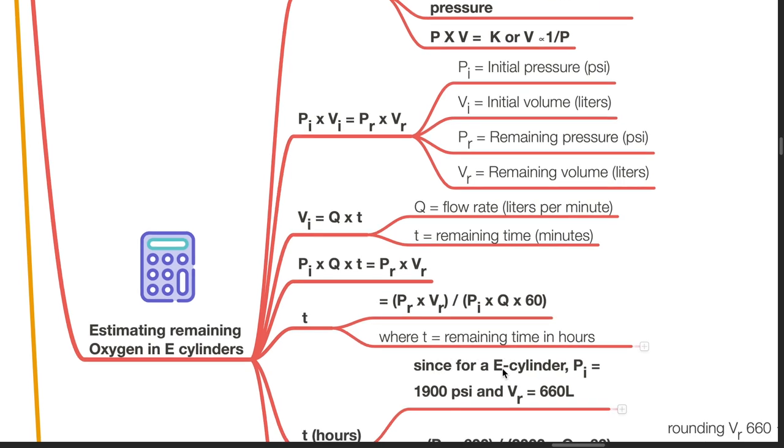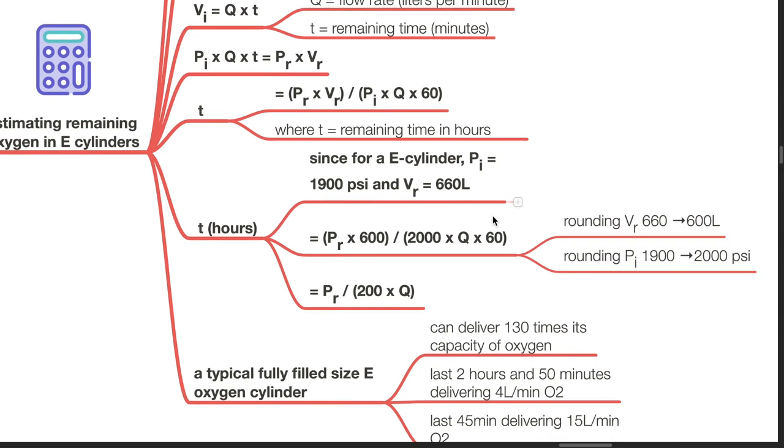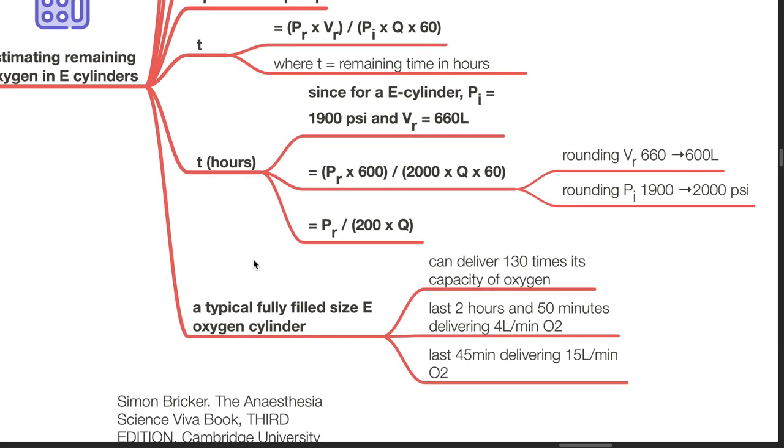where T is remaining time in hours. Since for an E-cylinder, PI equals 1,900 PSI and VR equals 660 litres, PR times 600 divided by 2000 times Q times 60, rounding VR of 660 to 600 litres and rounding PI to 2000 PSI, PR divided by 200 times Q equals T in hours. A typically fully filled size E oxygen cylinder can deliver 130 times its capacity of oxygen, last 2 hours and 50 minutes delivering 4 litres per minute of oxygen, and last 45 minutes delivering 15 litres per minute of oxygen.